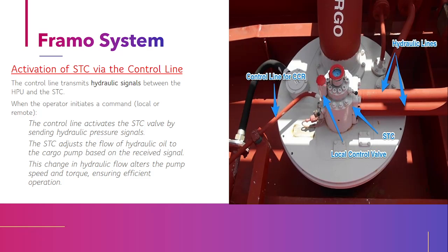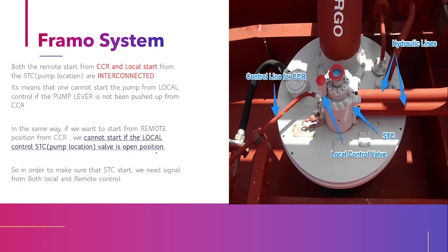The HTC is activated by a control line. This control line sends a signal to the speed torque controller to allow the high-pressure oil from the power pack to flow to the hydraulic motor. The hydraulic signal between the hydraulic power unit and the HTC is transmitted via this control line, signalling the controller to regulate the flow.